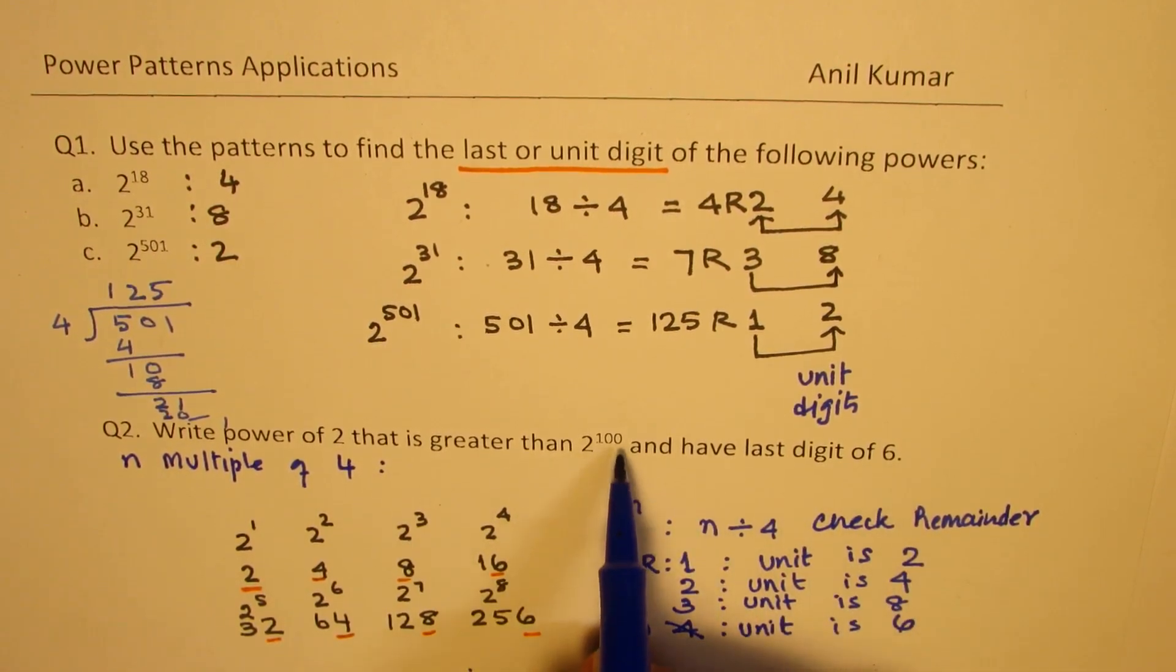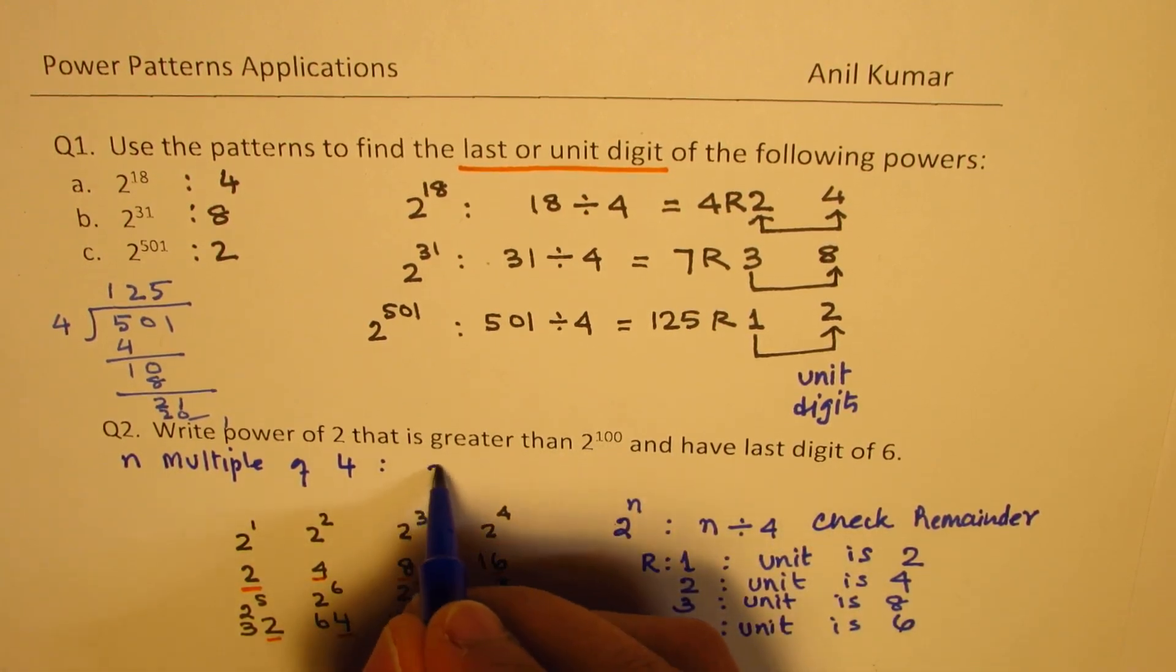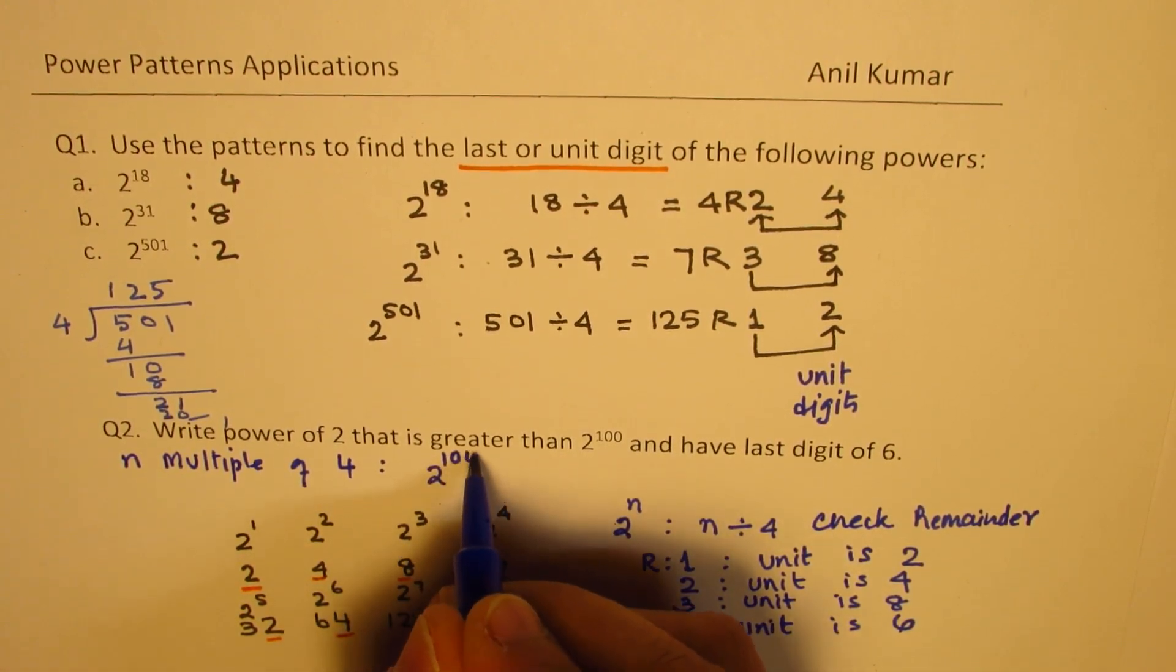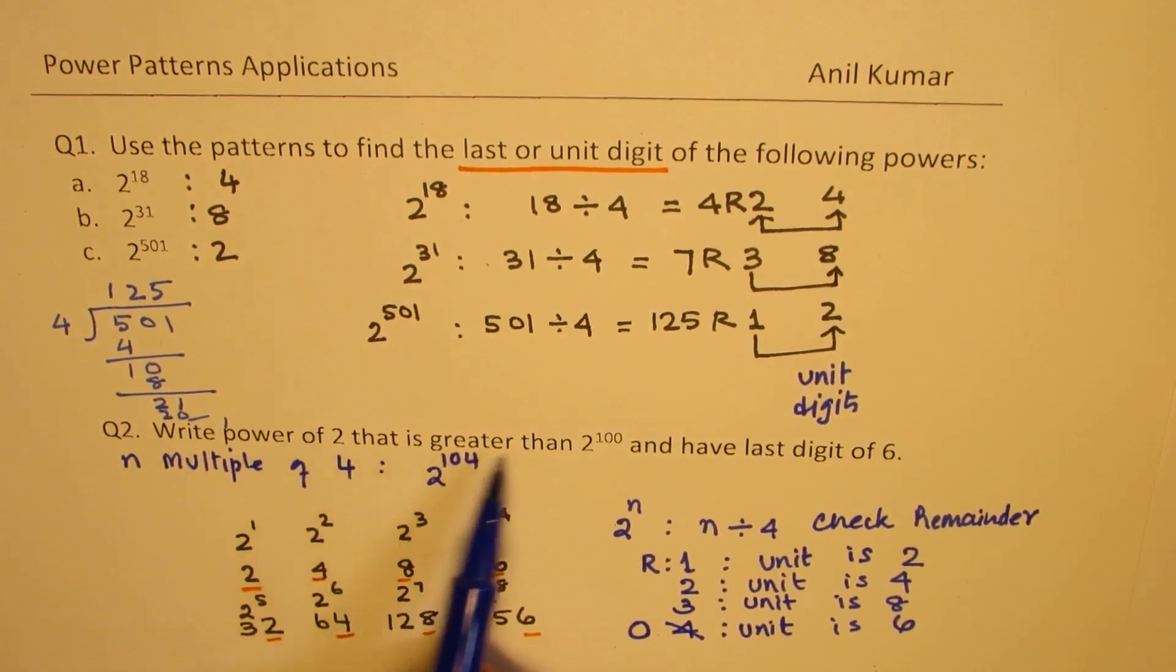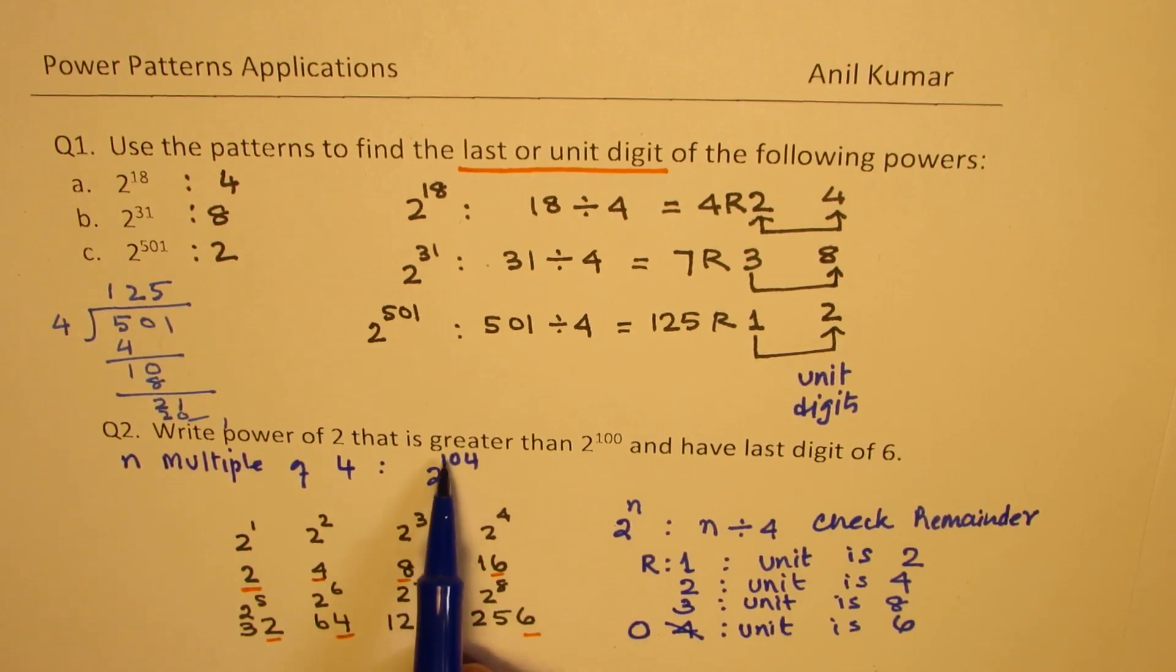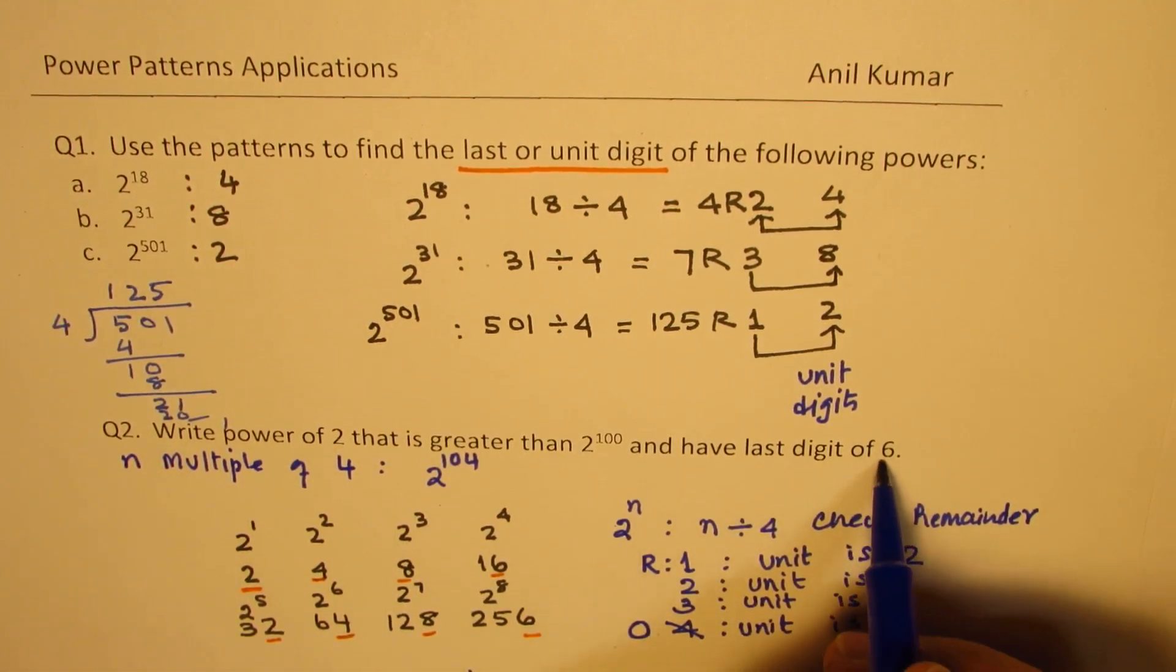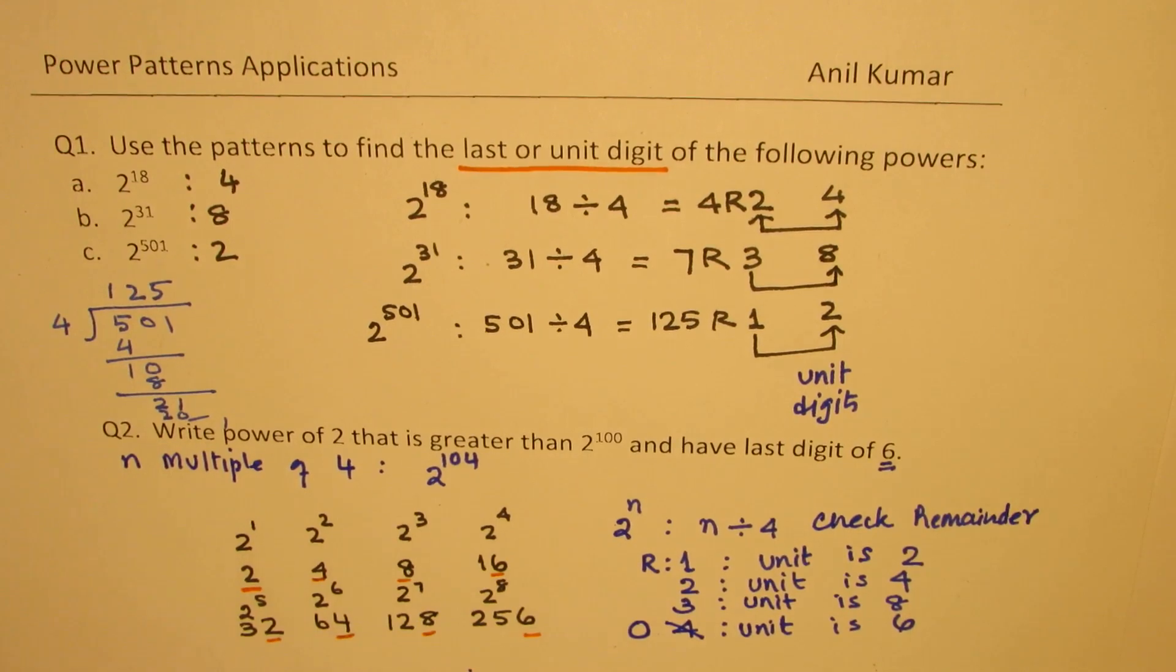Now, 100 is a multiple of 4. So, the next higher will be 104. So, we could write this as 2 to the power of 104. So, write the power of 2 that is greater than this and have a last digit of 6. So, 2 to the power of 104 will have a value with last or the unit's digit as 6, since it evenly goes in 4. Does it make sense to you?